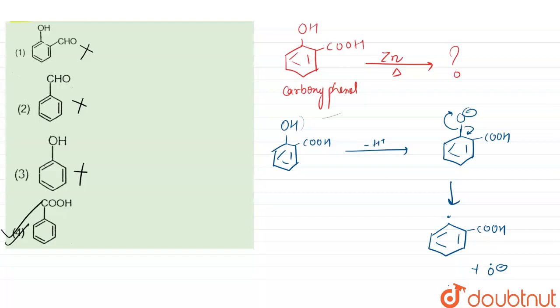Our fourth option is the correct answer, that is benzoic acid. The product when carboxyphenol obtained by Reimer-Tiemann is deoxidized with zinc powder is benzoic acid. That is our option number four. Thank you.